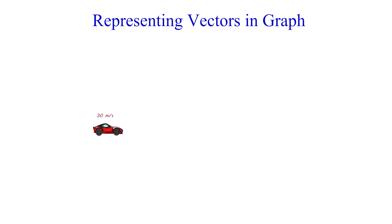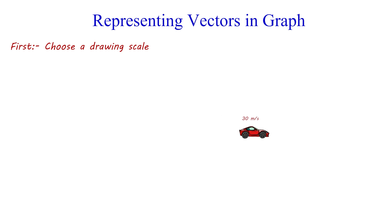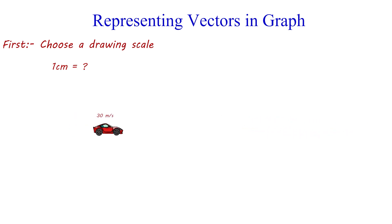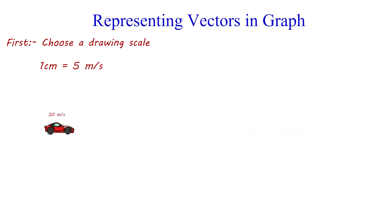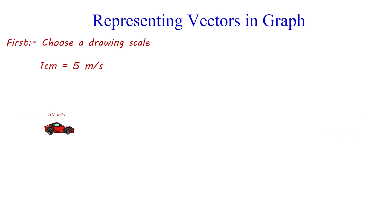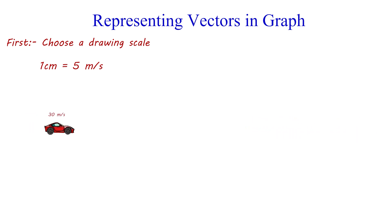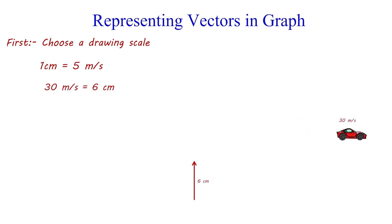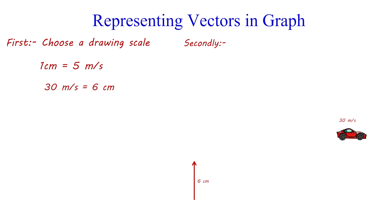Another example: to represent the velocity of a car moving east at 30 meters per second, first choose a drawing scale — in this example, 1 cm equals 5 meters per second. This means every 1 cm drawn represents 5 m/s. Since the velocity is 30 m/s, divide 30 by 5 to get 6 cm. So 30 m/s is represented by an arrow 6 cm long, pointing to the right to indicate east.